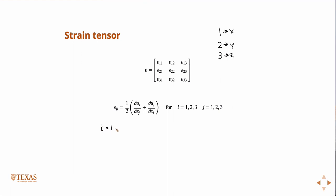So if we pick I equals one, J equals one, we get epsilon one one is equal to one-half partial U1 partial X1 plus partial U1 partial X1. That's equal to one-half two partial U1 partial X1, which is equal to partial U1 partial X1.